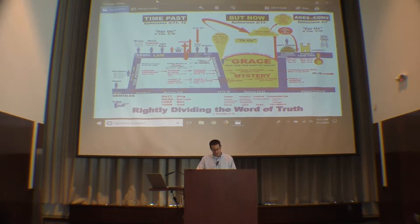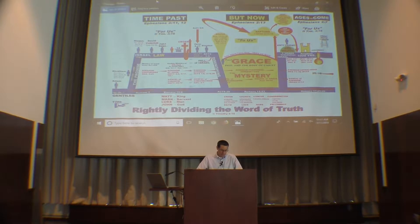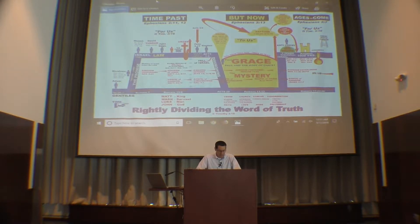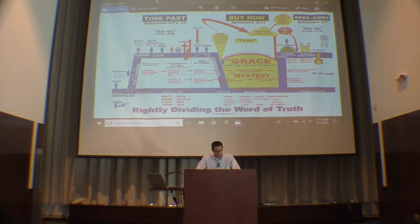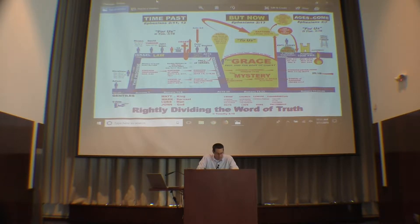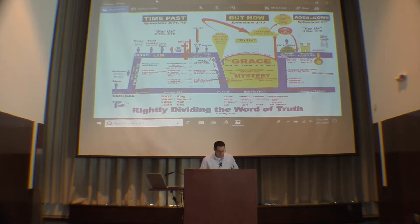Leviticus 11 verse 1: 'And the Lord spake unto Moses and to Aaron saying unto them, speak unto the children of Israel saying, these are the beasts which ye shall eat among all the beasts that are on the earth.' In other words, there are some you eat, some you don't. Verse 3: 'Whatsoever parteth the hoof and is cloven-footed and cheweth the cud among the beasts, that shall ye eat. Nevertheless, these shall ye not eat — the camel, because he cheweth the cud but divideth not the hoof, he is unclean unto you. And the coney, because he cheweth the cud but divideth not the hoof, he is unclean unto you.' And so on.